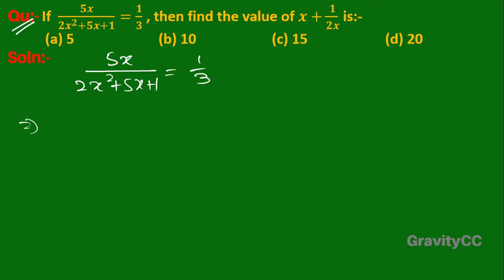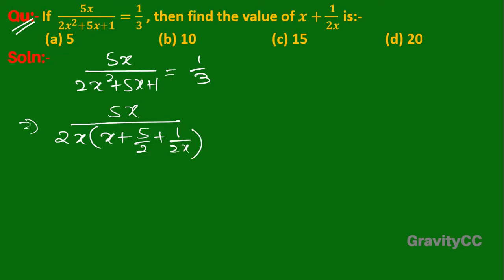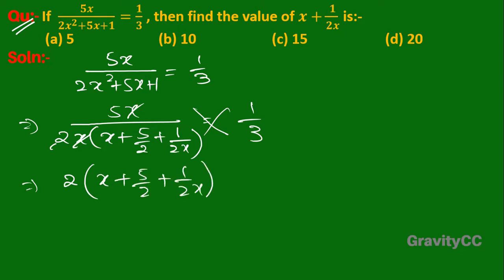Now we take 2x as a common factor from the denominator, so we get x plus 5 upon 2 plus 1 upon 2x equals 1 upon 3. The x's cancel. Now we cross multiply, so we get 2x plus 5 upon 2 plus 1 upon 2x equals 15.